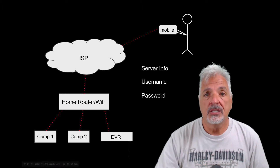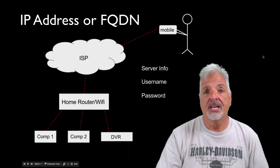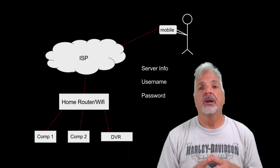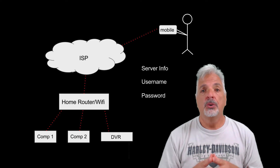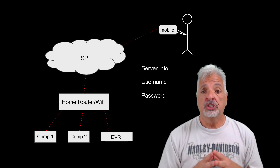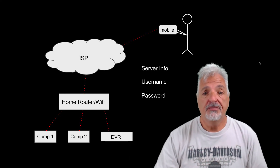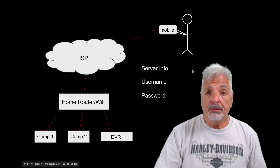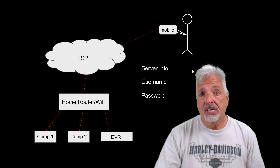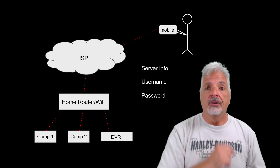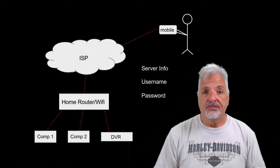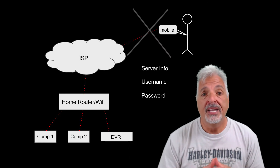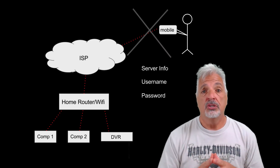Usually that server information is the IP address or the fully qualified domain name, and this is where a dynamic IP address could pose a problem. It will change. So if you did configure this information with a dynamic IP address, you will probably connect the first time and maybe a couple of times after that. However, once your IP changes from your ISP, you will no longer be able to make that remote connection into your network.